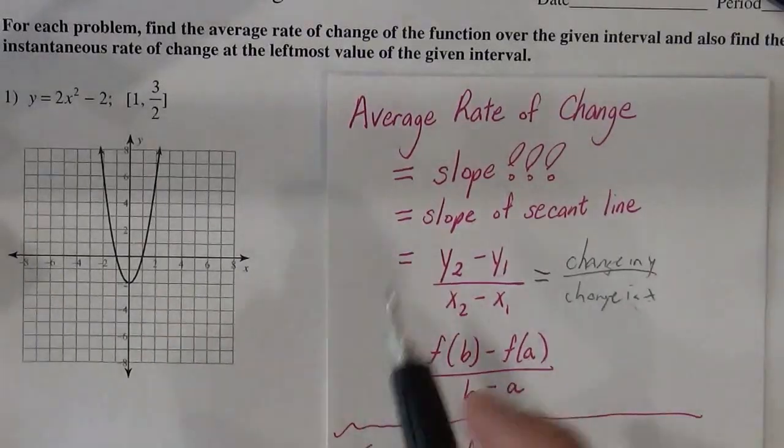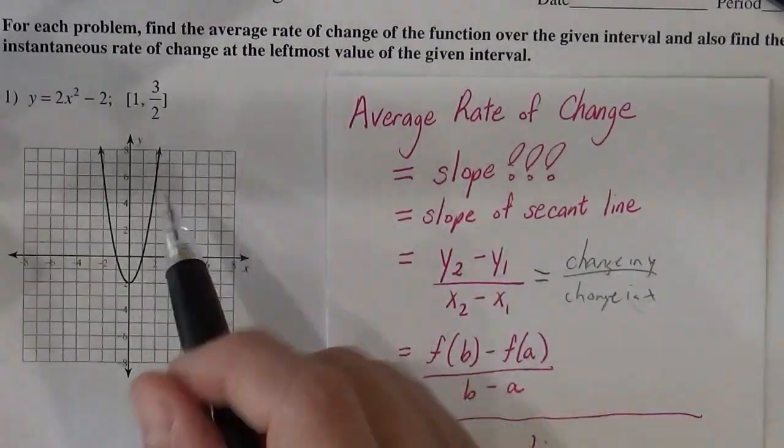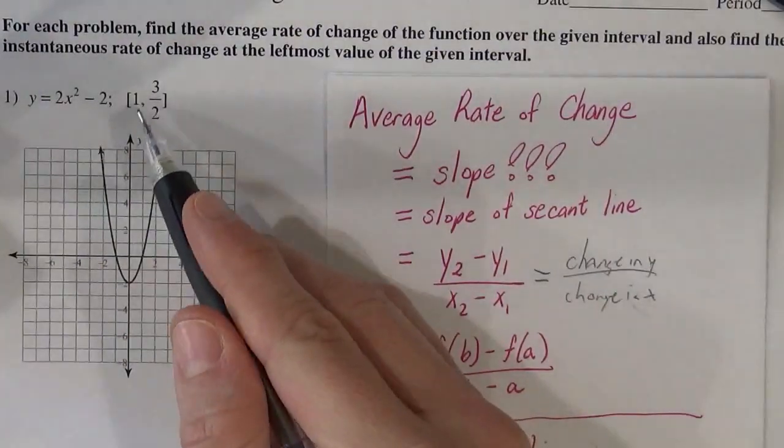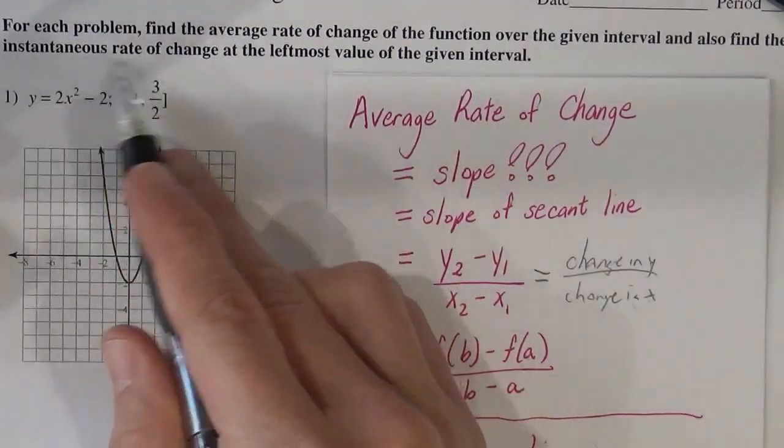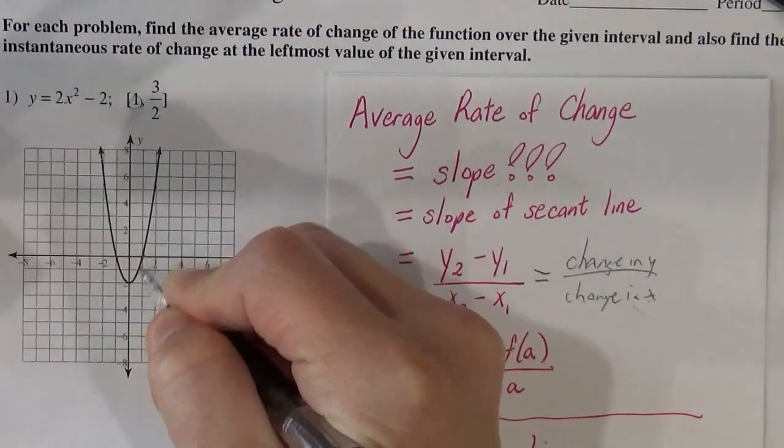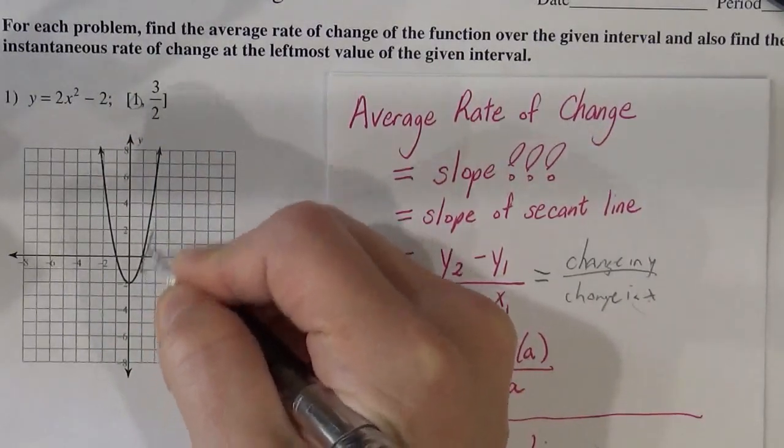These problems are bridging the average rate of change and the instantaneous rate of change. Ultimately what we're trying to do is find the instantaneous rate of change at 1. We want to figure out how fast this is increasing at 1.